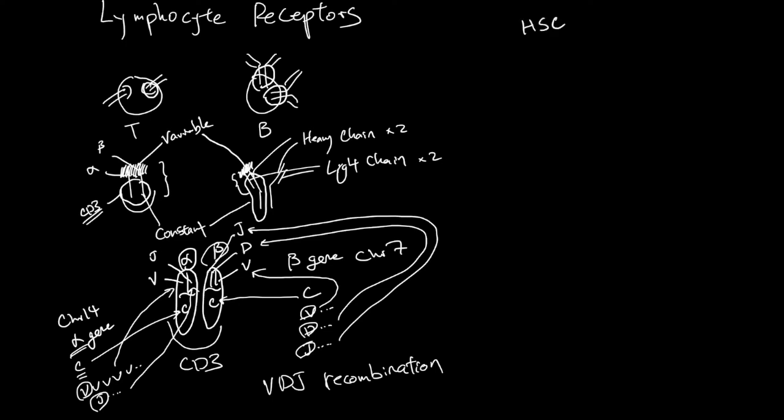Marrow makes hematopoietic stem cell, which gets to thymus to commit to being the T stem cell. And this commitment comes with making of receptors, which uses the VDJ recombination process.